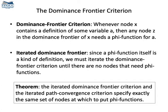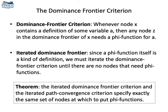From this definition of dominance frontier, we have the following algorithm to insert phi functions in the CFG. Whenever a basic block x contains a definition of some variable a, we need to insert phi functions for a at every node in the dominance frontier of x. Because the insertion of these phi functions produces new definitions of a, we need to iterate this procedure — inserting more phi functions in the dominance frontier of the dominance frontier of x. This set of nodes is called the iterated dominance frontier of x.